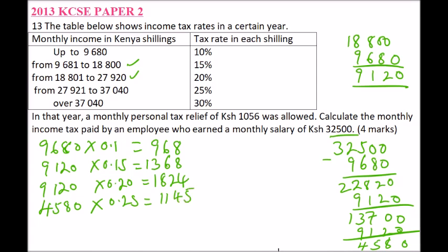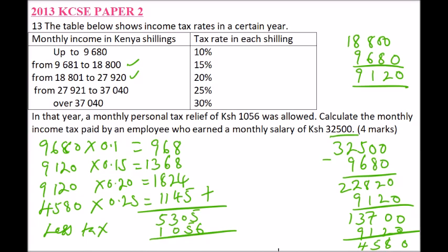Now we add up all the tax from each bracket to find the total tax, which gives us 5,305. We then subtract the monthly personal relief of 1,056, and that gives a difference of 4,249. So 4,249 Kenyan shillings is the tax the employee paid to the government every month.